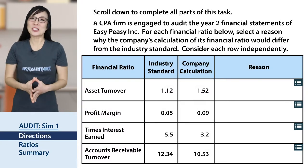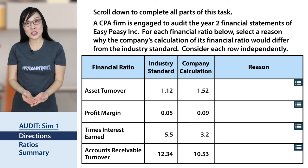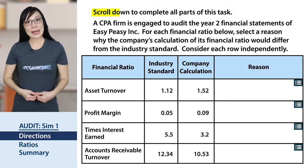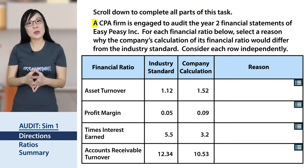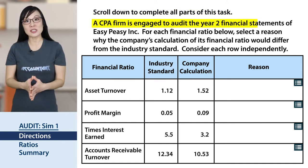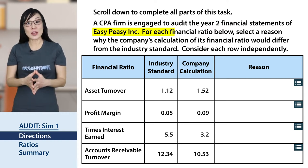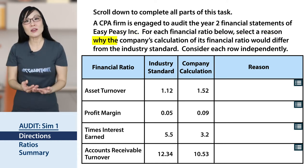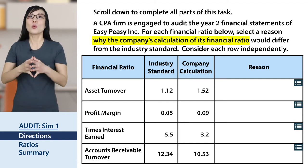In this first sim we'll start off nice and easy with some financial ratios. Let's read the prompt and scroll down. A CPA firm is engaged to audit the year two financial statements. For each financial ratio below, select a reason why the company's calculation of its financial ratio would differ from the industry standard.